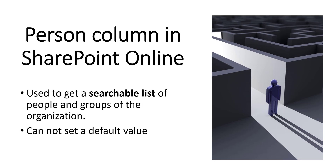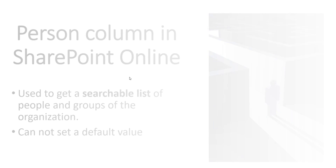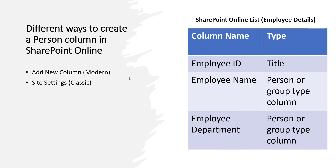What is this person column? It is a column type in SharePoint Online list and document library. It is used to get a searchable list of people and groups of the organization, and we cannot set a default value here. Basically we are picking a person from an organization. There are two different ways to create a person column: using Add New Column in modern experience, and Site Settings used in classic experience.